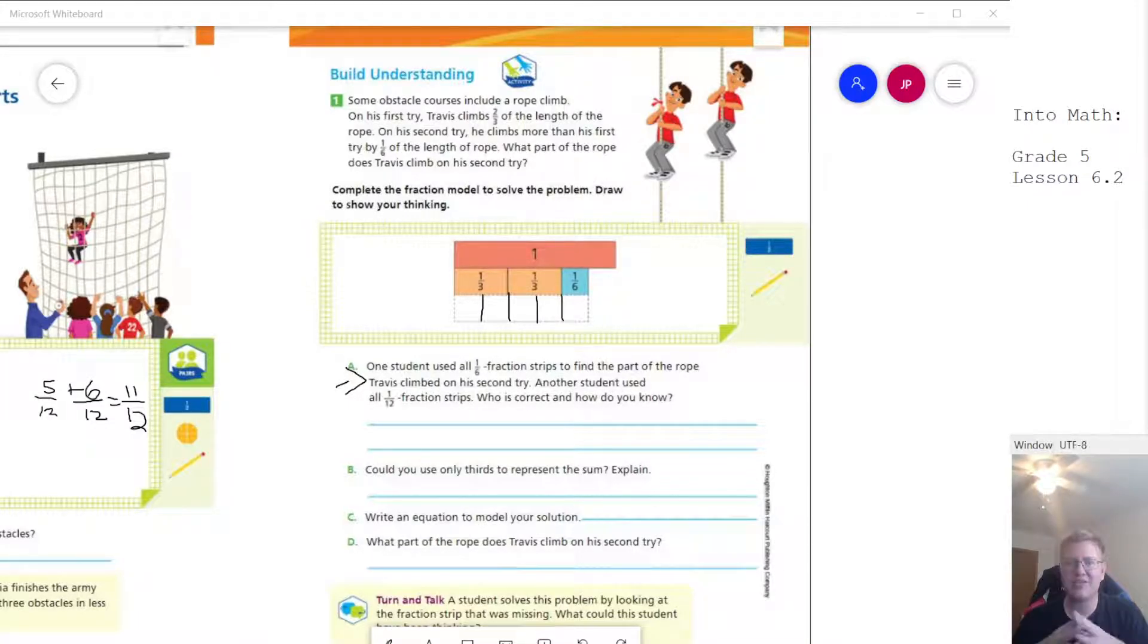Again, whenever we're adding fractions, we are never going to change the bottom number after we find an equivalent fraction. So we have to have the same denominator for both parts. And then when we add, we are only adding the top number.